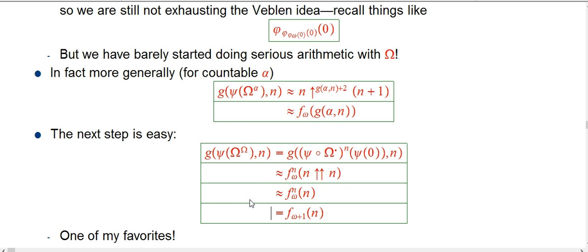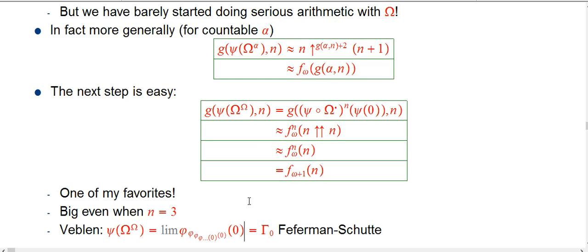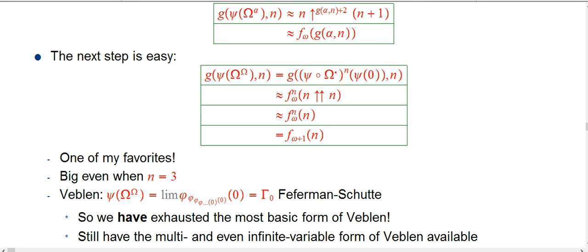It says, okay, iterate that. Do what we always like to do, is when you find a new slot, iterate it. And that's going to say that this actual ordinal, psi of omega to the omega, is exactly the limit of that process of start with phi 0 of 0, and then put it in the subscript, etc. We've talked about how that's called the Feferman-Schütte ordinal. It has a nice role in proof theory and things like that, and that's gamma sub 0.